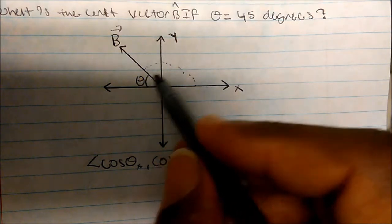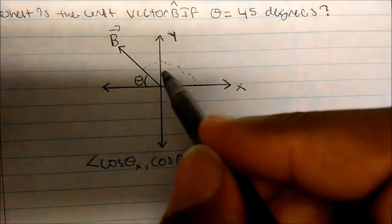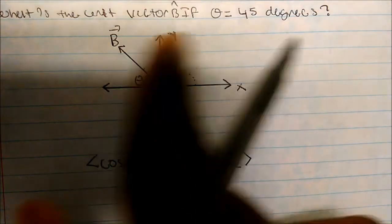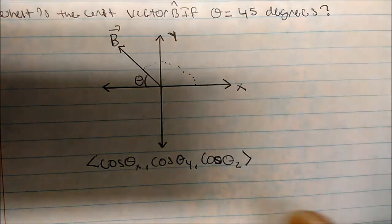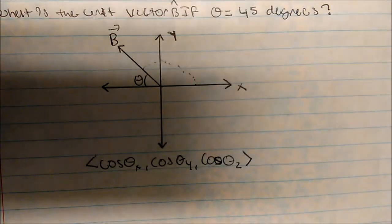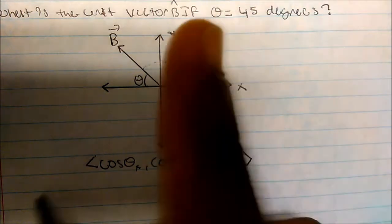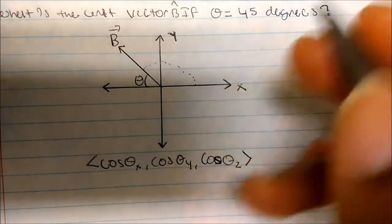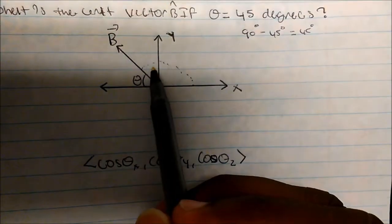If theta is 45, and we know the sum of the angles in each quadrant — because essentially what we're doing is right triangles — we know all four quadrants total up to 360 degrees. That means if we divide by four, each quadrant has to equal 90 degrees. So if we know this is 45, and the sum of one quadrant has to be 90, then 90 minus 45 gives us this angle, which is 45 degrees.